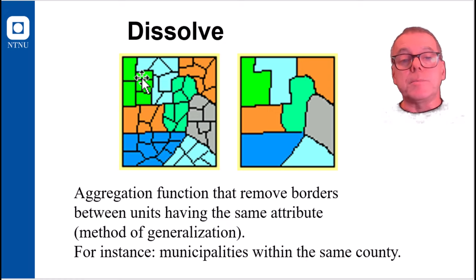Dissolve is a tool in itself and it is a generalization process very often used to group objects together. That could, for instance, be municipalities which are belonging to one county. And you may group them based on one common number in a field, and the result is where you are removing the boundary between those objects which are sharing this quality.